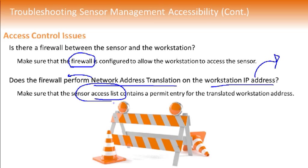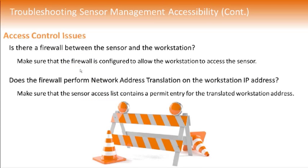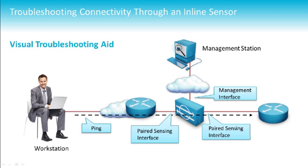What if you have an entirely different problem — you can reach your sensor from a management perspective, but the sensor isn't allowing through traffic? It's in inline mode and it's stopping everything, not just malicious traffic, but black-holing everything. First, the interface pair has to be enabled, and the interfaces on the neighboring devices have to be enabled and healthy. Make sure the inline pair is constructed correctly and that the router interfaces are in the appropriate up-up status.